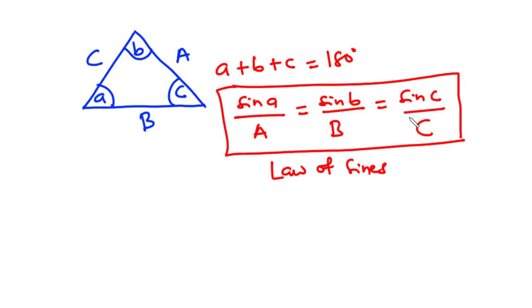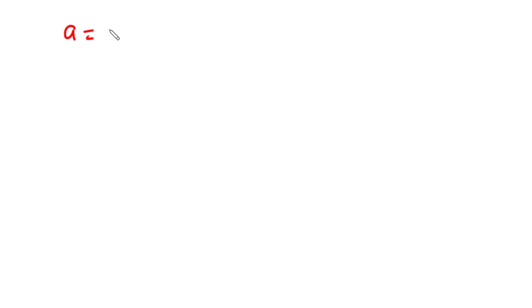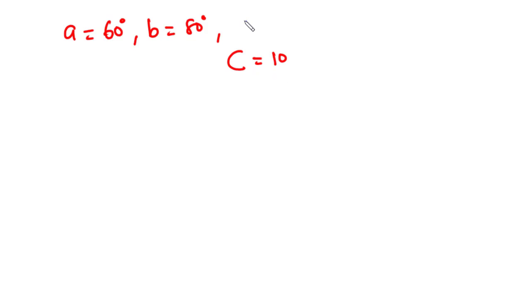We have three fractions, but when solving a problem we consider two of them at a time. Let's practice with the Law of Sines. Given a triangle with interior angles a = 60°, b = 80°, and side c = 10, we need to find angle c, side a, and side b.